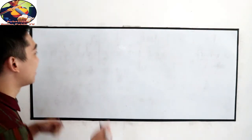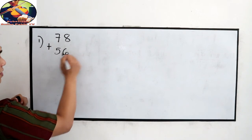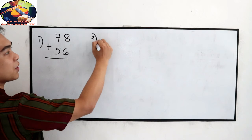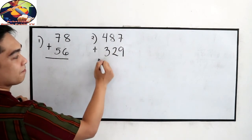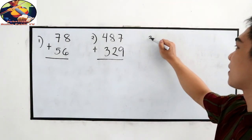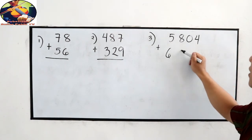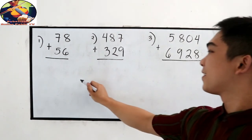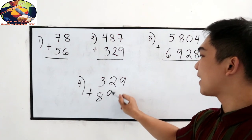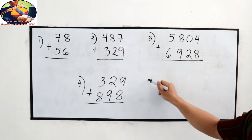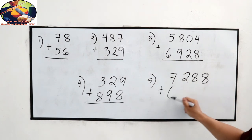You can copy. Number one: 78 plus 56. Number two: 487 plus 329. Number three: 5,804 plus 6,928. Number four: 329 plus 898. And number five, our last number: 7,288 plus 6,312.